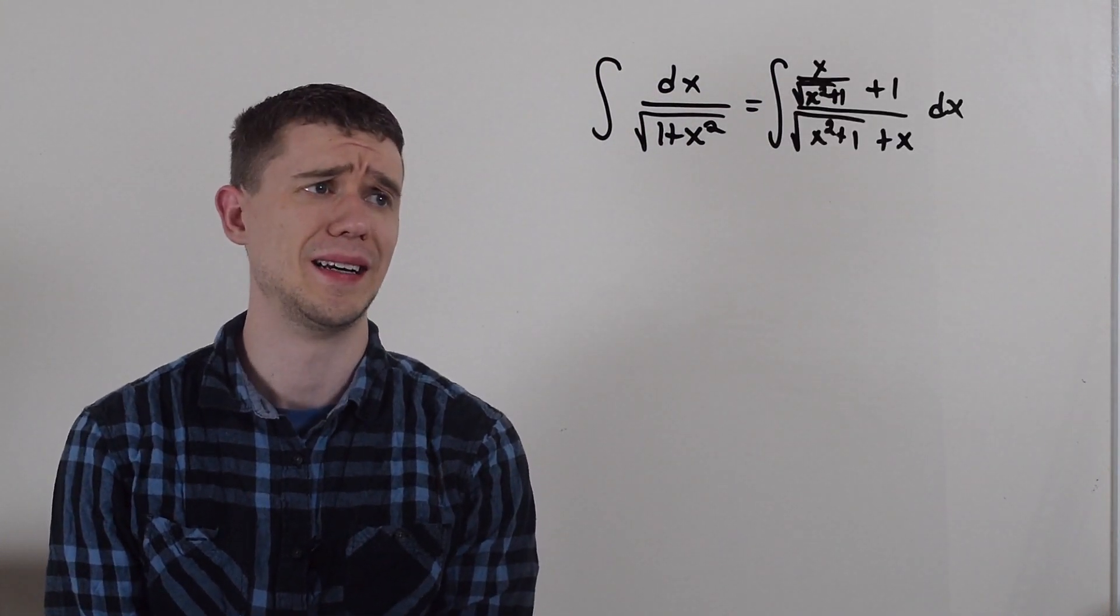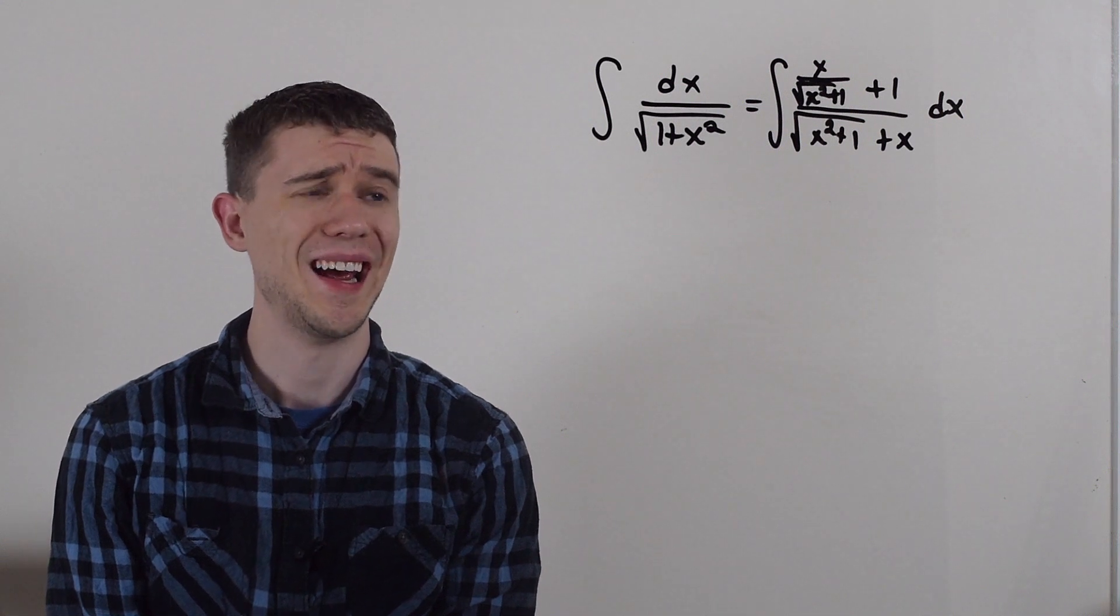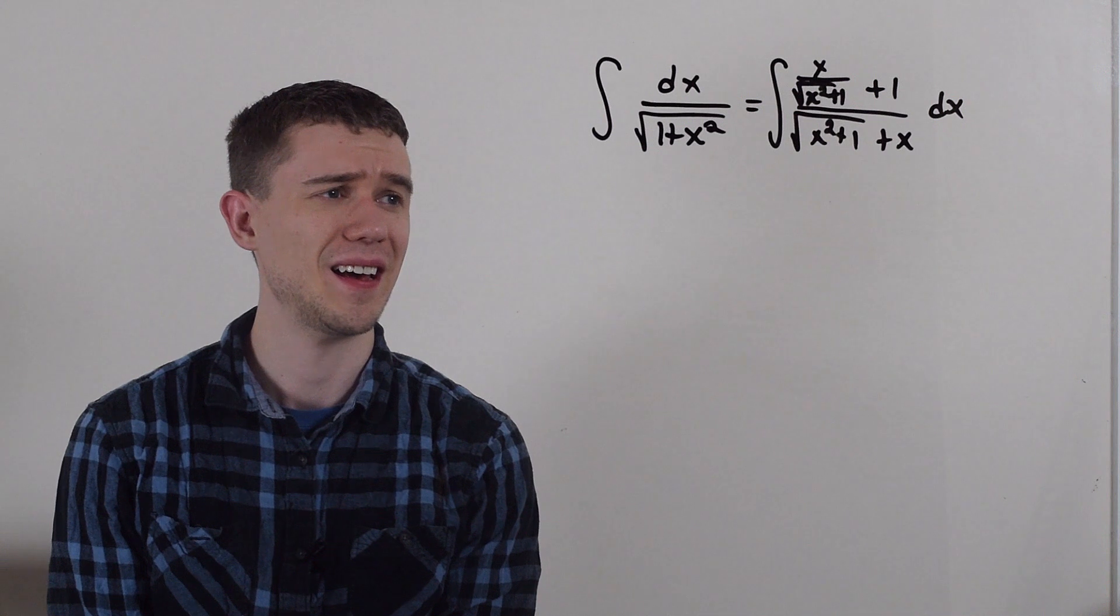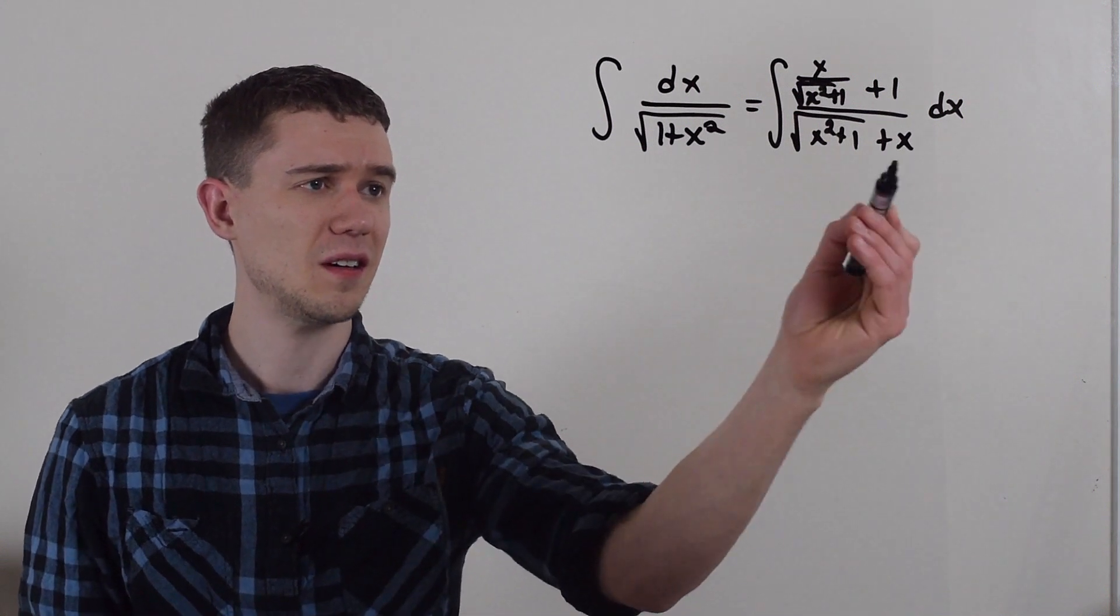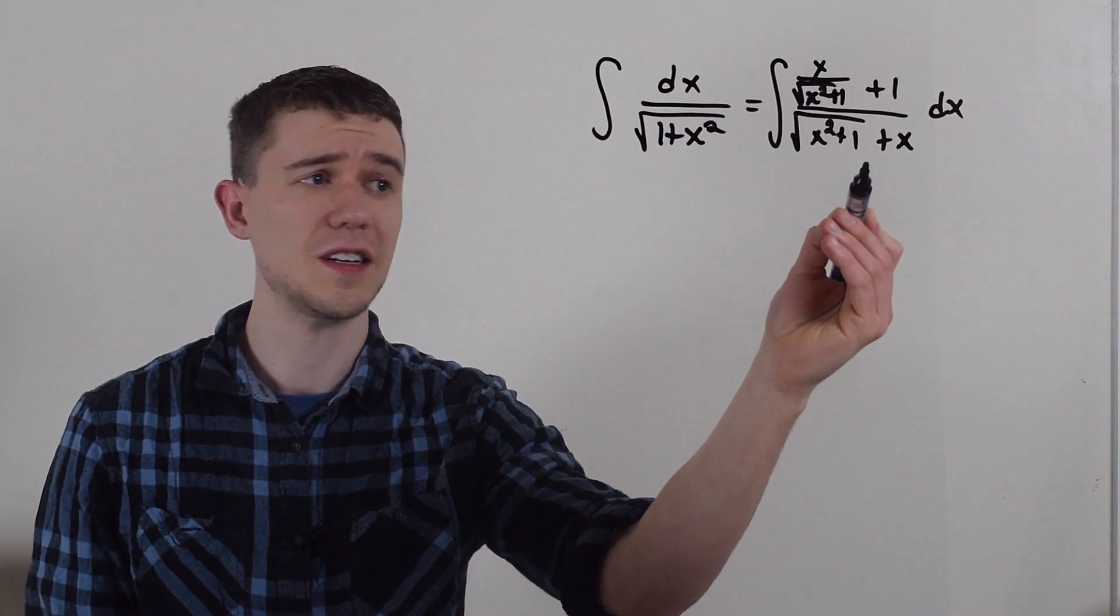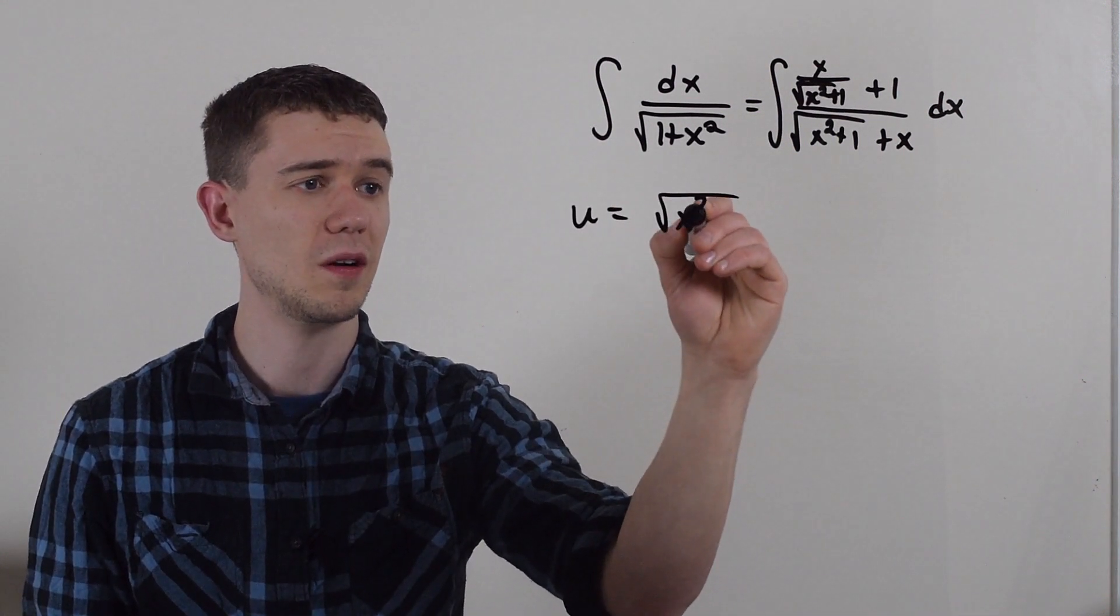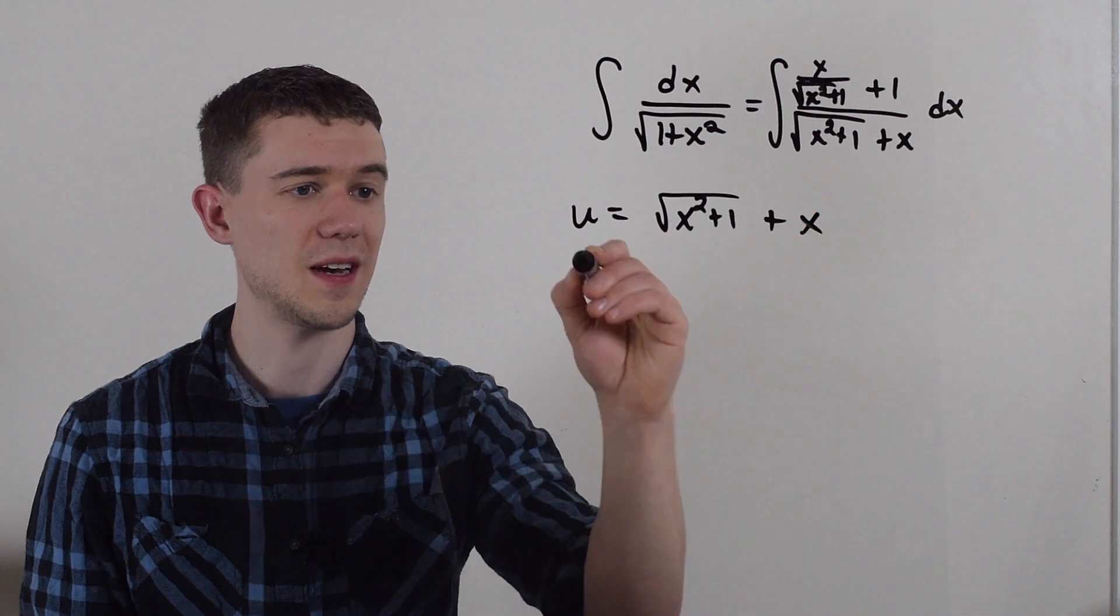So we've done a bunch of algebra nonsense and I've gotten here. And what's crazy is if you notice the denominator, if I take the derivative of the denominator, I actually get the numerator. If I just let this be a u substitution, square root of x squared plus 1 plus x, then du...